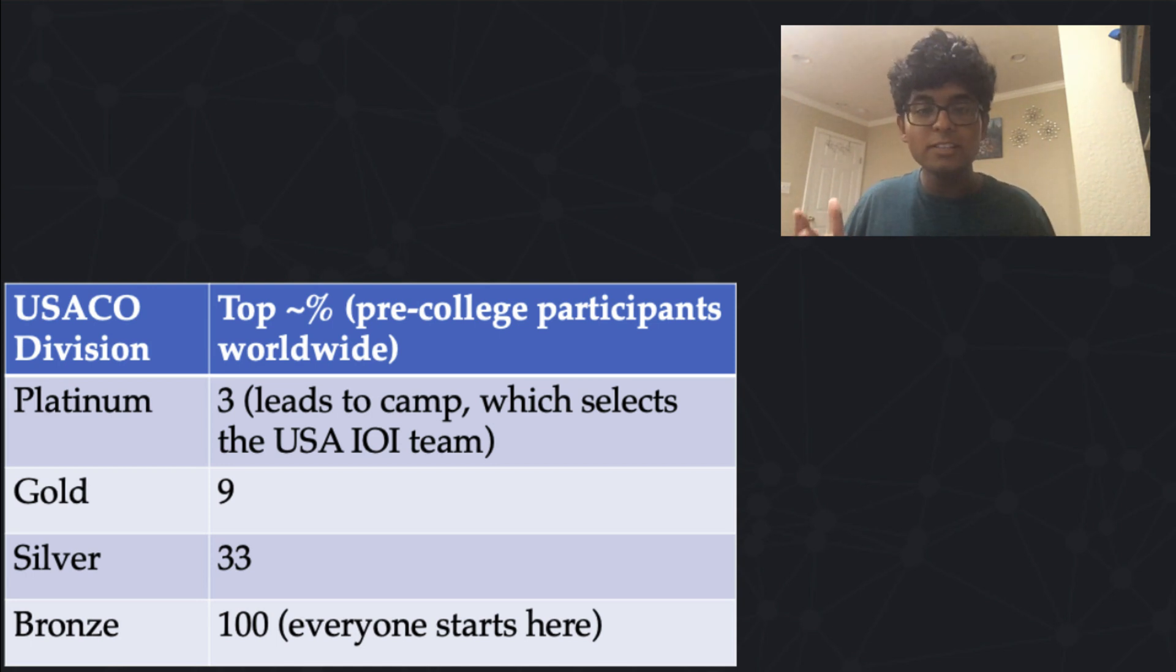Additionally, USACO contestants who qualify for even the silver or gold divisions have an amazing head start for algorithm and data structure based coding interviews. The best thing? Signing up for USACO is completely free, online, and open to everyone. So go ahead and visit their official website USACO.org after this video to sign up and familiarize yourself with the format and the rules.